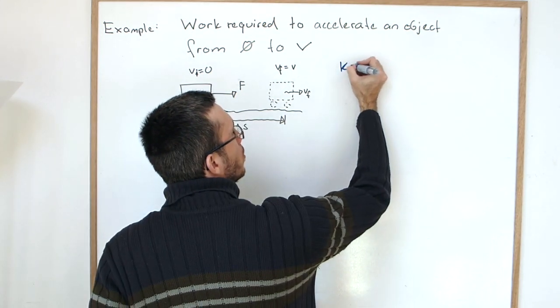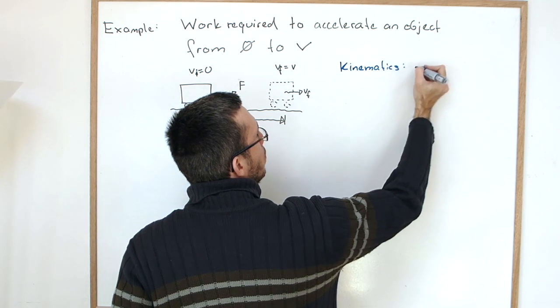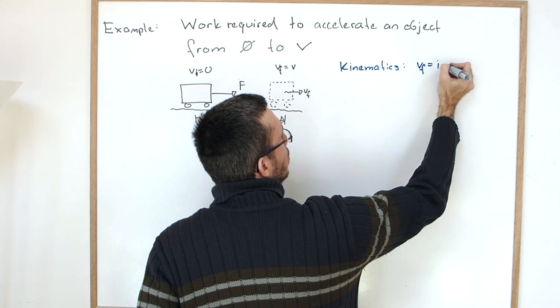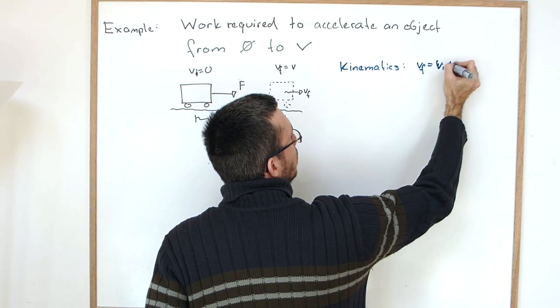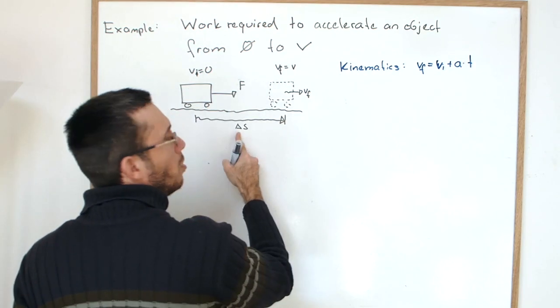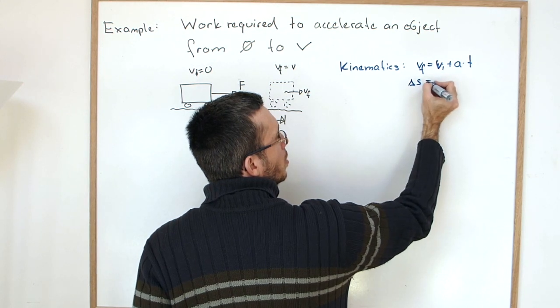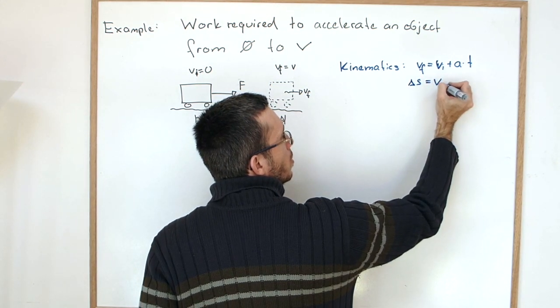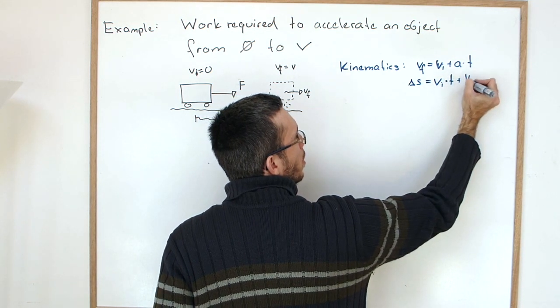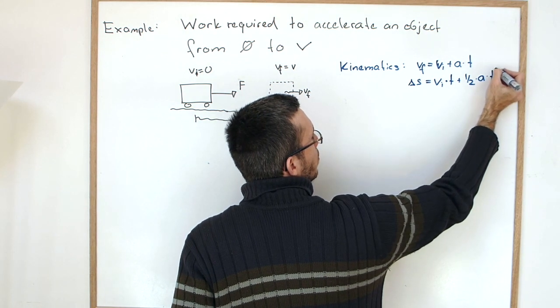We know that the final velocity is the initial velocity plus acceleration times time. We also know that displacement, delta s, is the initial velocity times time plus 1/2 times the acceleration times time squared.